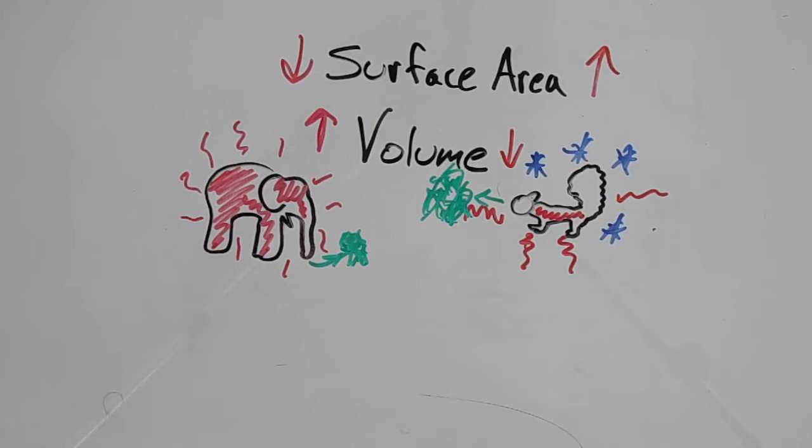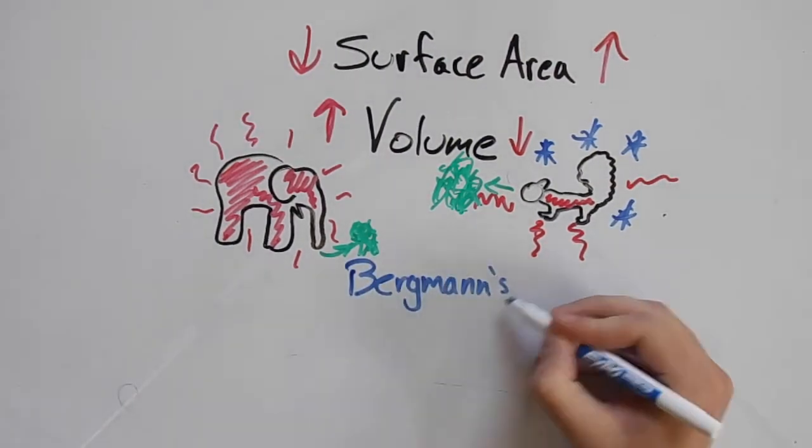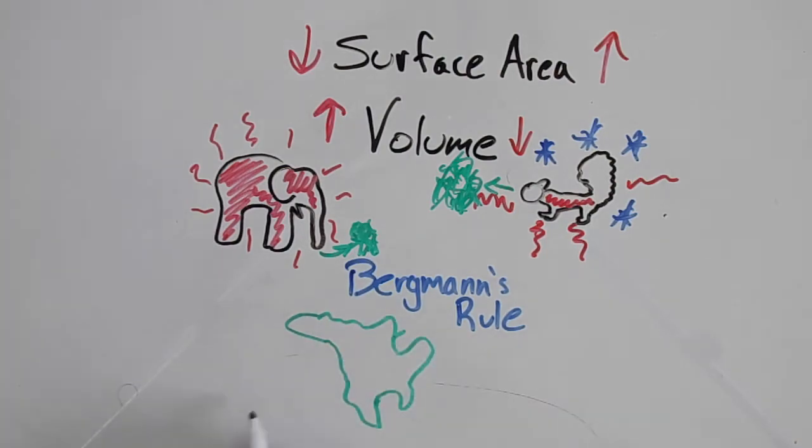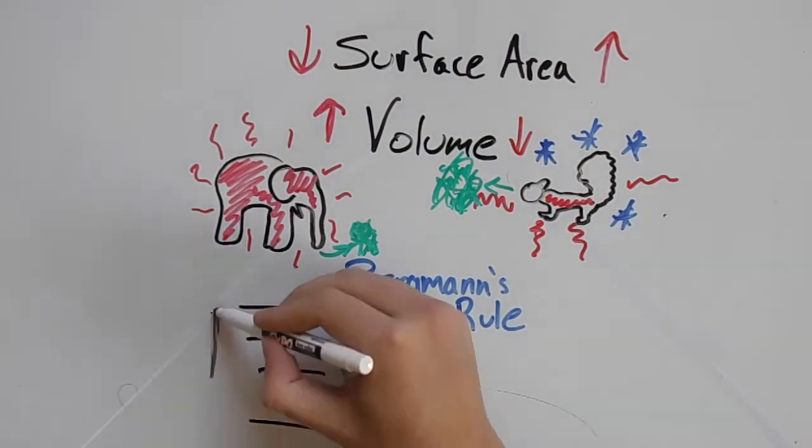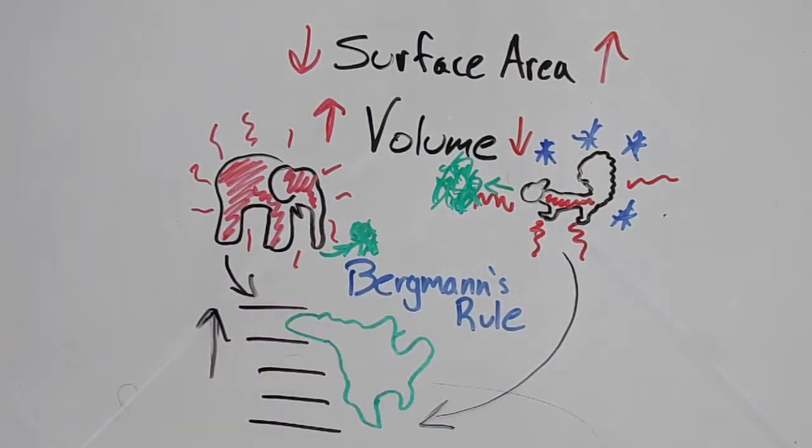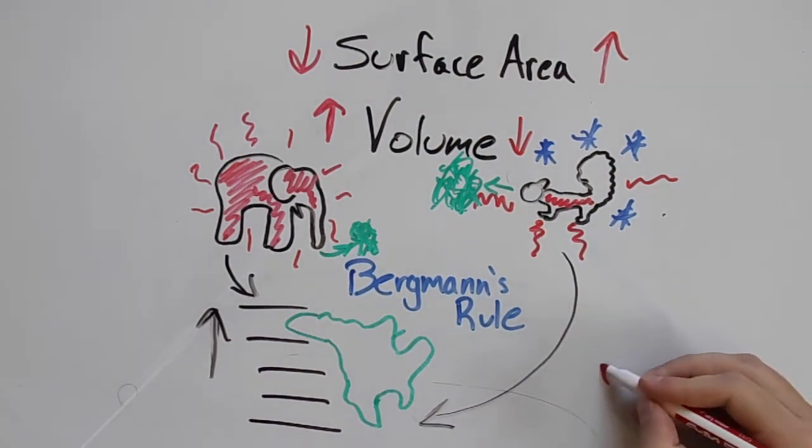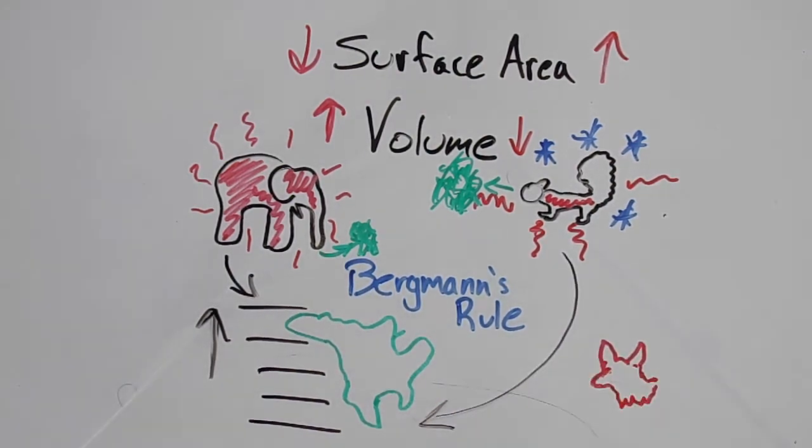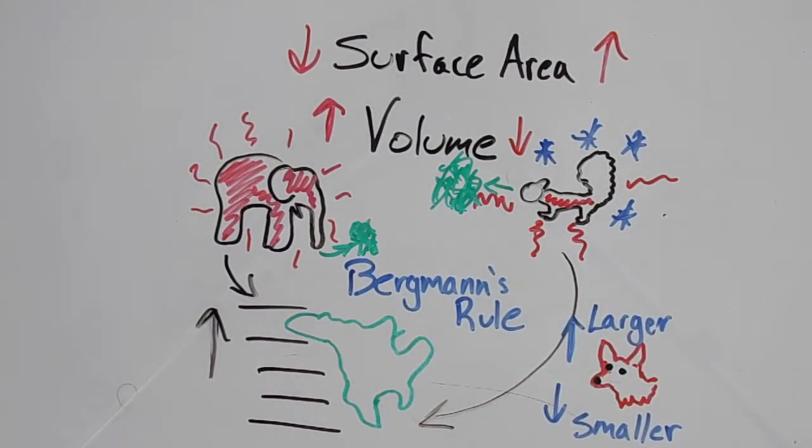This is also the physical process behind Bergman's Rule, a cool concept in ecology demonstrating that as latitude increases, average body mass for a group of animals will increase as well. For example, red foxes have a huge distribution across a wide latitudinal range. Studies consistently show that foxes farther to the north are larger than foxes in the south, for these very reasons of surface area and volume.